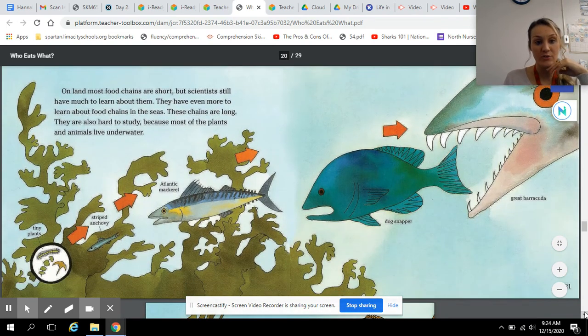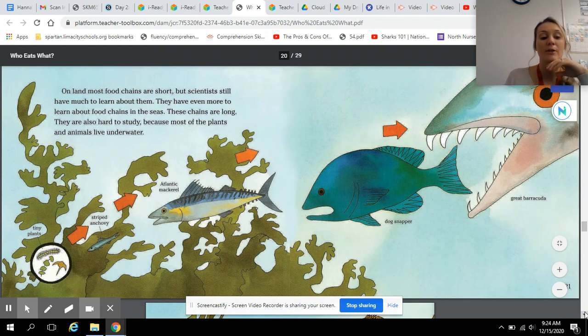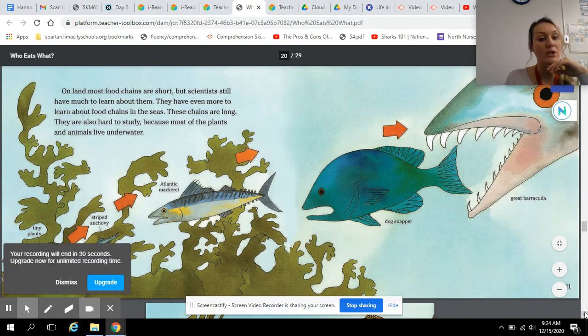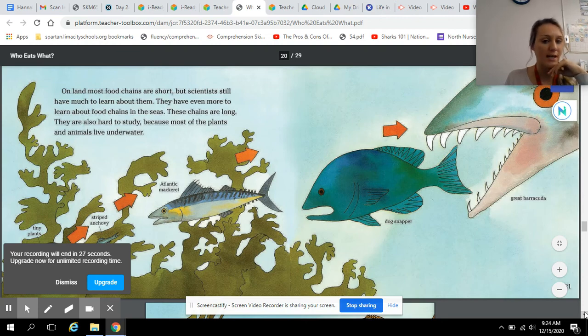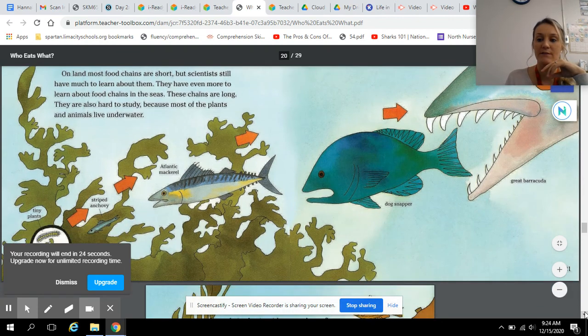On land, most food chains are short, but scientists still have much to learn about them. They have even more to learn about food chains in the seas. These chains are long. They are also hard to study because most of the plants and animals live underwater.